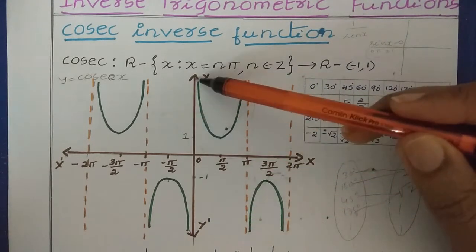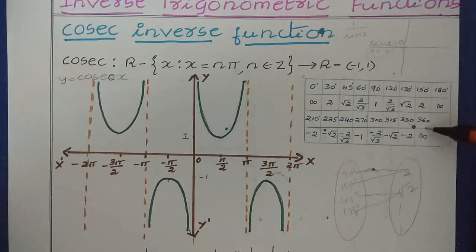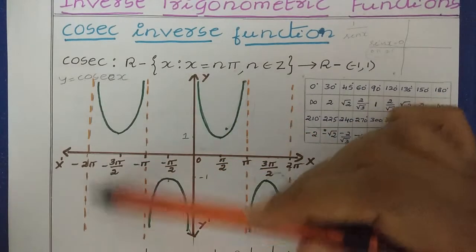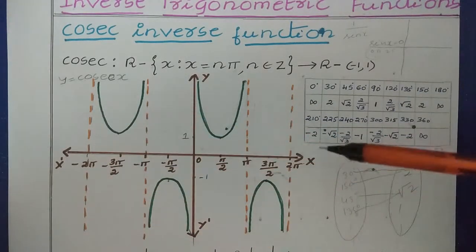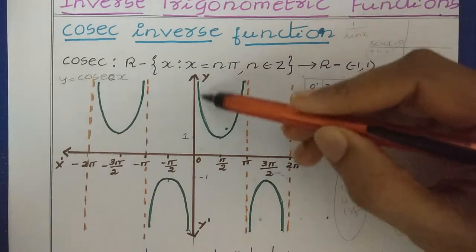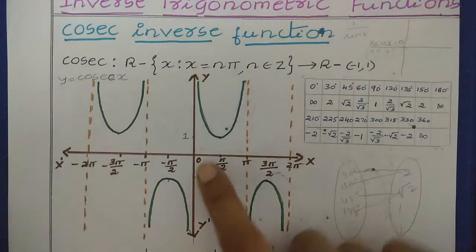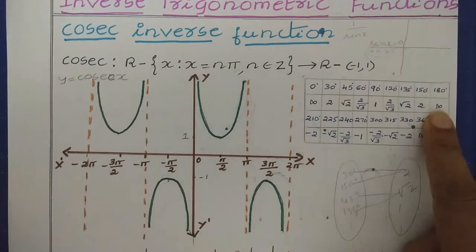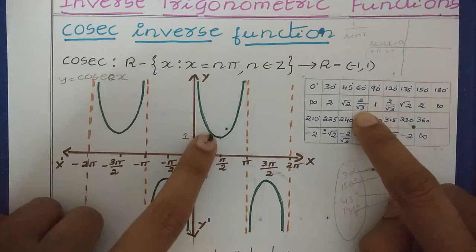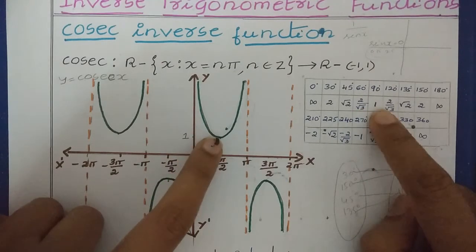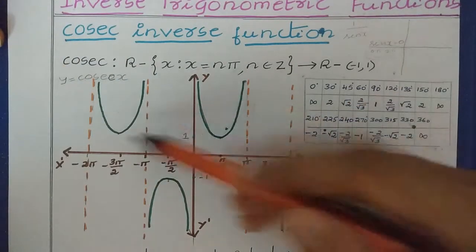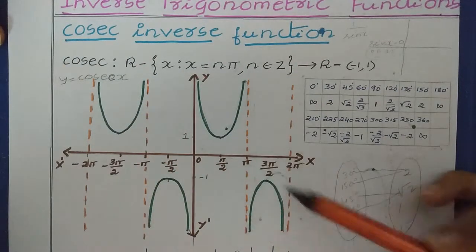Here also you can have a dotted line — 0 means it is infinity. For 360 degrees, infinity. Similarly, on the left-hand side, for minus π, infinity; for minus 2π, infinity. Based on this, we can plot the graph. You can observe that for the interval 0 to π, the values go like this: 2, square root of 2, 2 divided by square root of 3, then 1, then the same values are repeated. So here we can have the full graph of the Cosec Function.